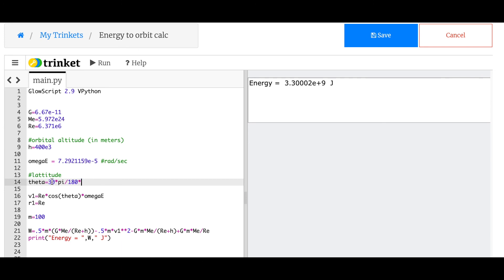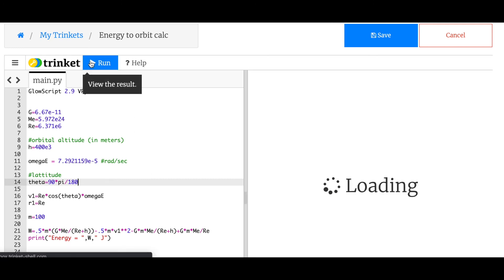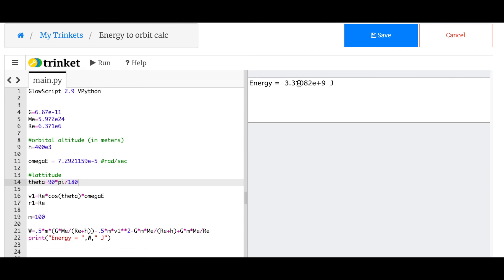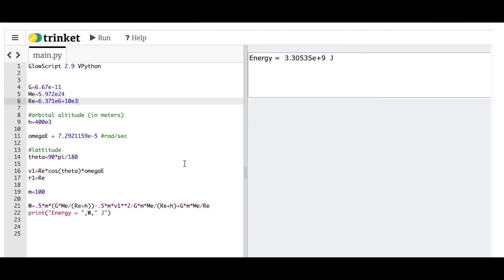Let's do theta equals 90 for the North pole. That takes more energy, 3.31 times 10 to the 9. What if I increase the starting location by 10 kilometers? I didn't really gain that much. So the question is, would it be better to launch from a mountain or from the equator? And the answer is the mountain. Because there's something you're not thinking about that we're not considering, and that's all that energy that you need to get through the atmosphere in order to get into orbit too. If you start on a mountain, you have a better chance of that.